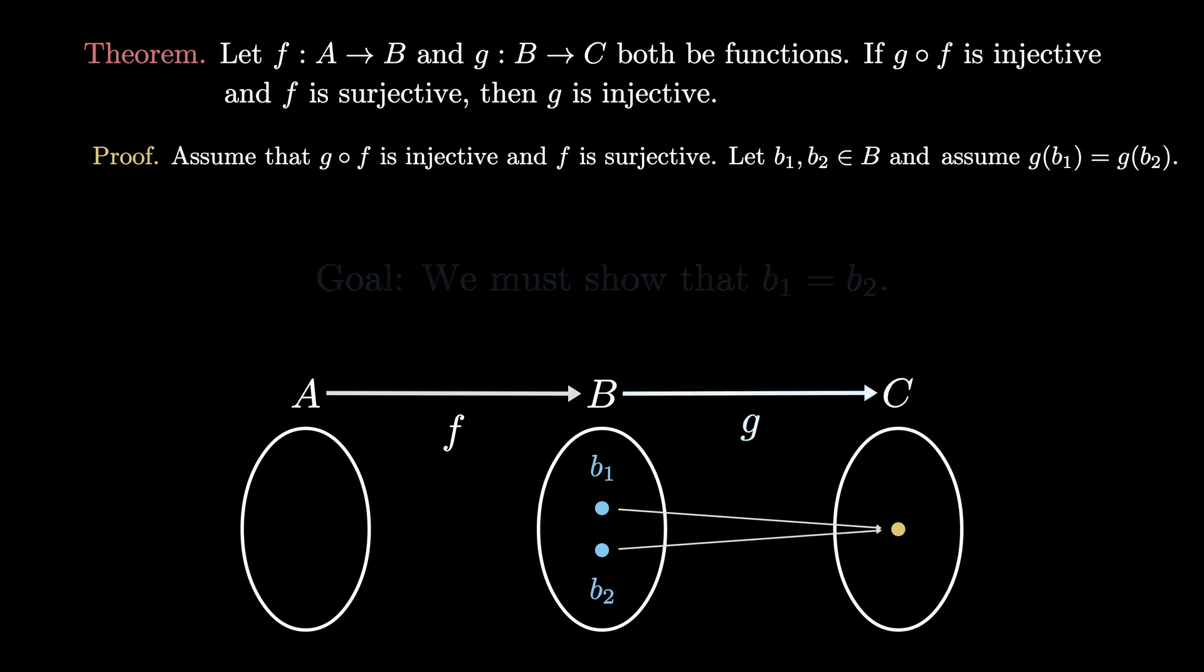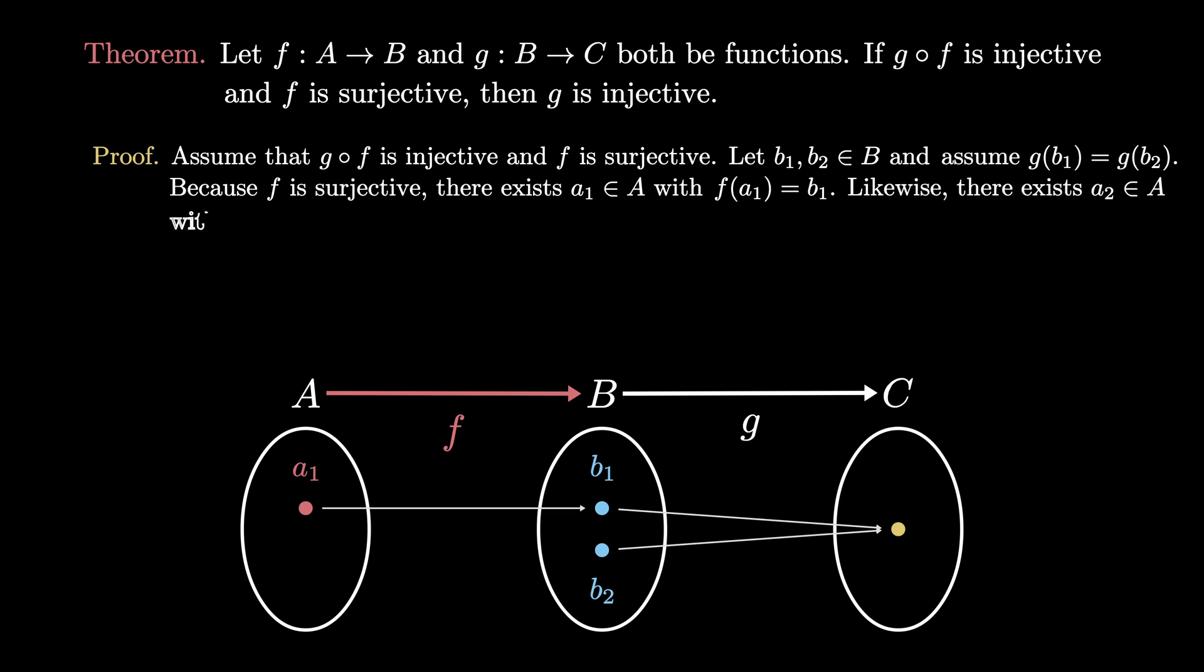Now, by assumption f is a surjective function, so there must be an element a₁ in A that maps to b₁, meaning f(a₁) = b₁. Likewise, there's also an element a₂ in A that maps to b₂, so f(a₂) = b₂.